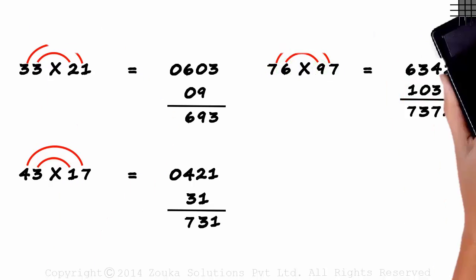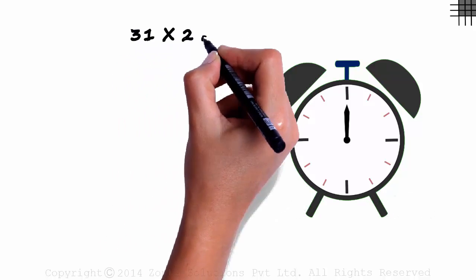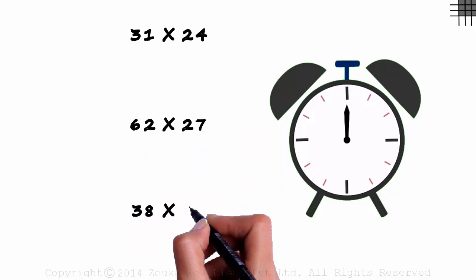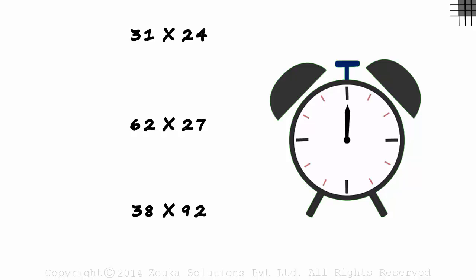Here are three examples for you, which you should be able to solve in 30 seconds flat. 15 seconds ideally, but I'm giving you 30 assuming it's your first time. 31 times 24, 62 times 27, 38 times 92. Your time starts now.